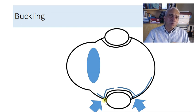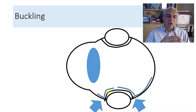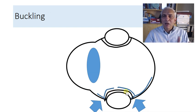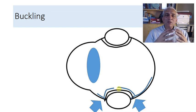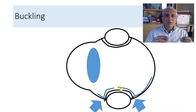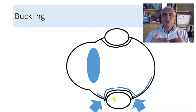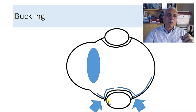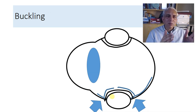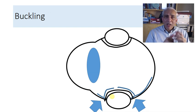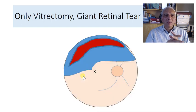The other way is scleral buckling — pushing the sclera forward toward the break, which releases vitreoretinal traction and apposites the break with the choroid. With cryo or laser creating a retinochoroidal adhesion, that area becomes sealed. A 360-degree buckle has limitations: a tire typically supports up to 7–9mm, and you need the break about 2mm in front of the posterior part of the buckle so it bulges forward to keep the retina together.